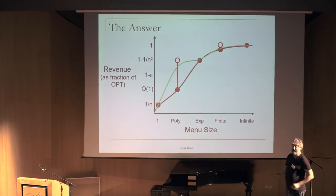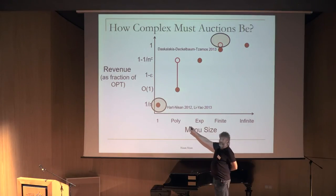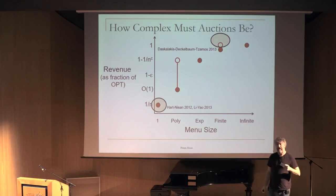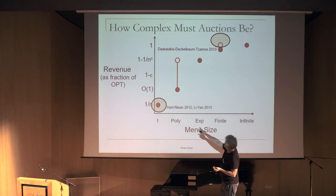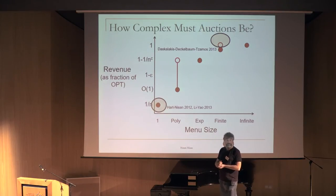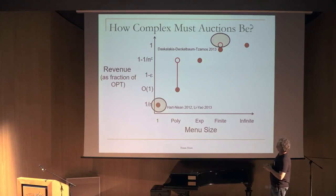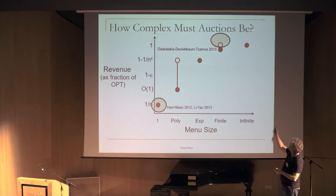Going back to our graphs: the generalization of the argument showing selling separately gives 1/2 of optimal also shows that selling all items as a bundle gives something like 1/n fraction of optimal revenue. So with complexity one (a single menu entry), you can already get something non-negligible. We also already know that finite menus cannot always achieve optimal revenue for some distributions.